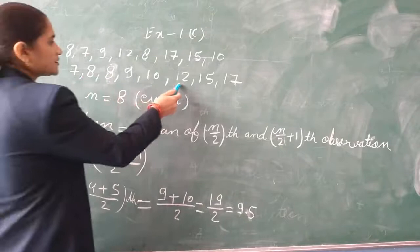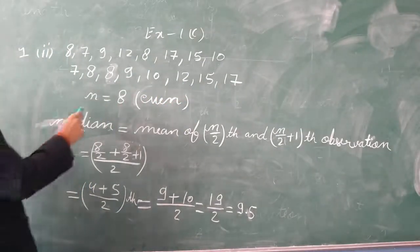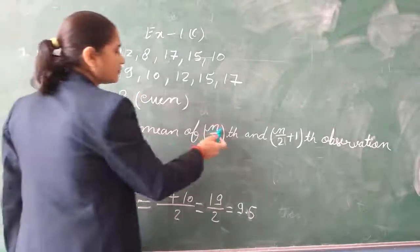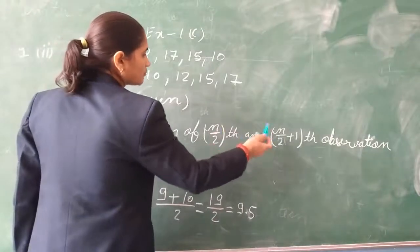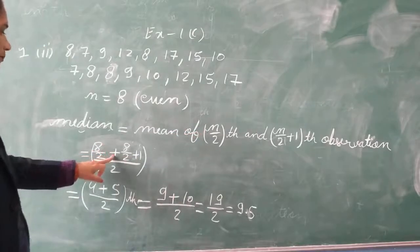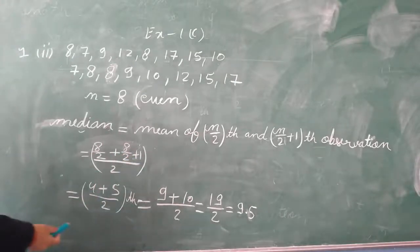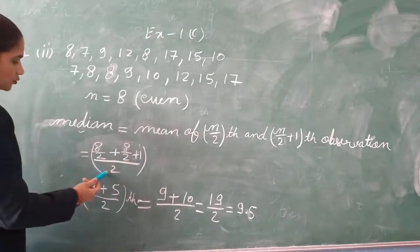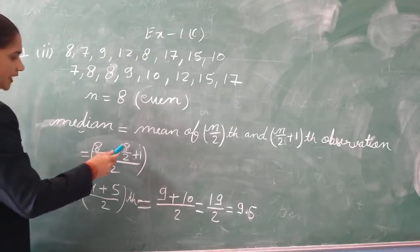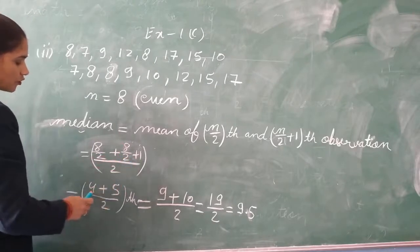Counting: 1, 2, 3, 4, 5, 6, 7, 8 — there are 8 observations, so n is even. For even n, we find the median as the mean of the n/2 and (n/2 + 1) observations. n is 8, so 8/2 = 4th and 8/2 + 1 = 5th. We need to find the mean of the 4th and 5th observations, then divide by 2.